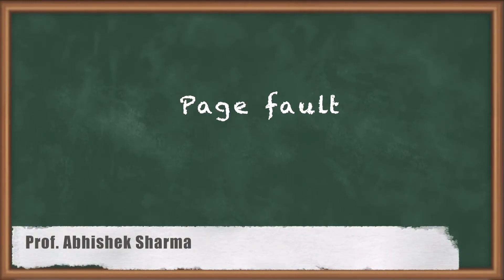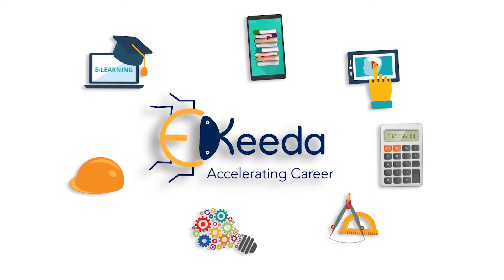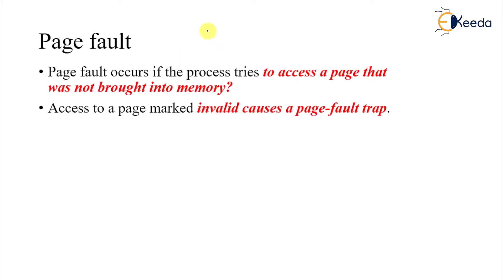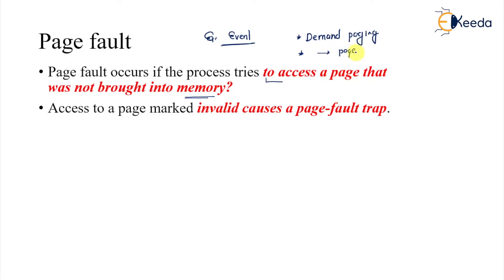In today's class we are going to talk about page fault. A page fault is an event that results when we access a page that is not brought into memory. We have just learned demand paging, where pages are loaded as and when required. When we try to access a page not in memory, it may result in a page fault. That page is marked as invalid and causes a page fault trap.